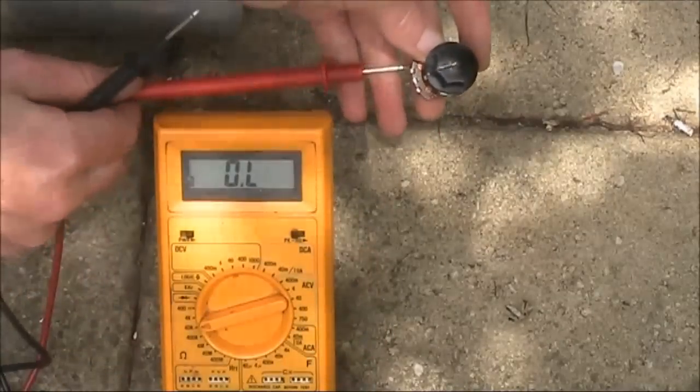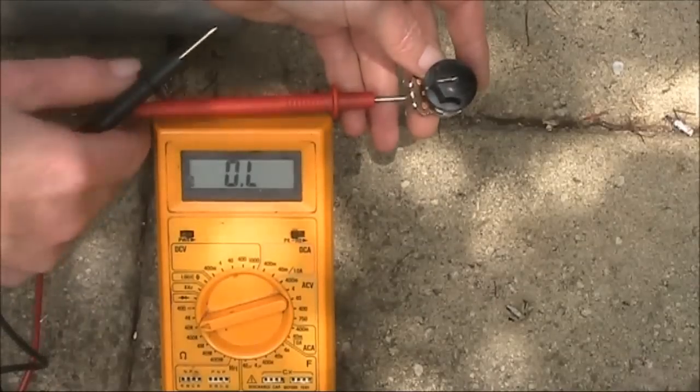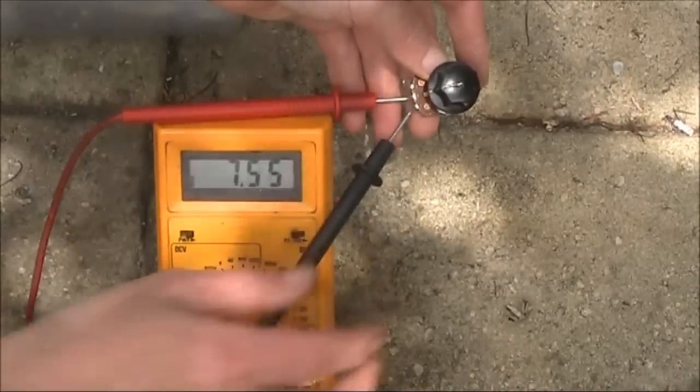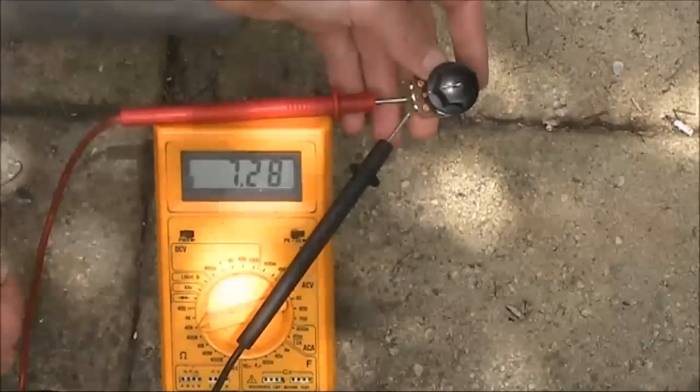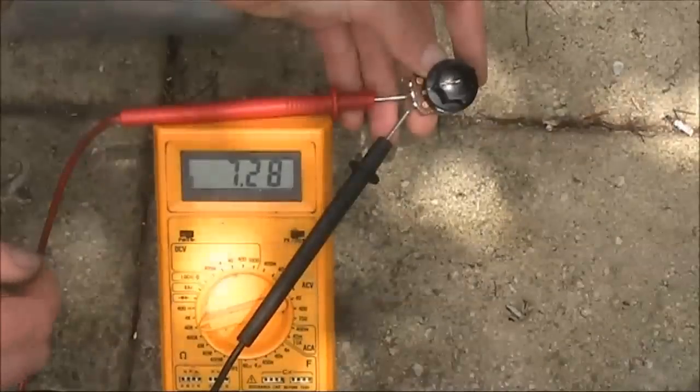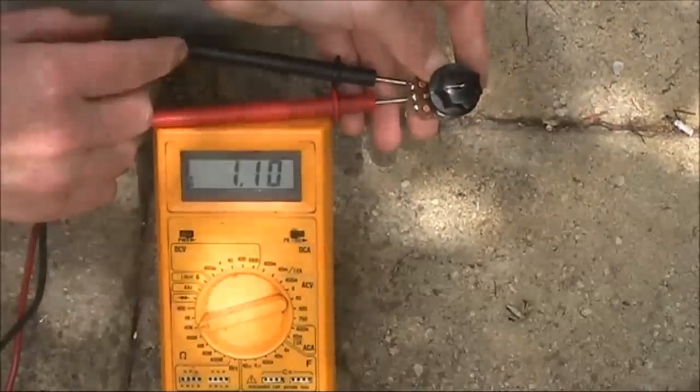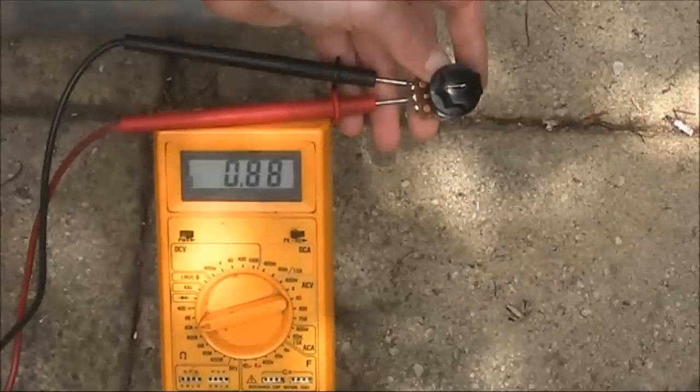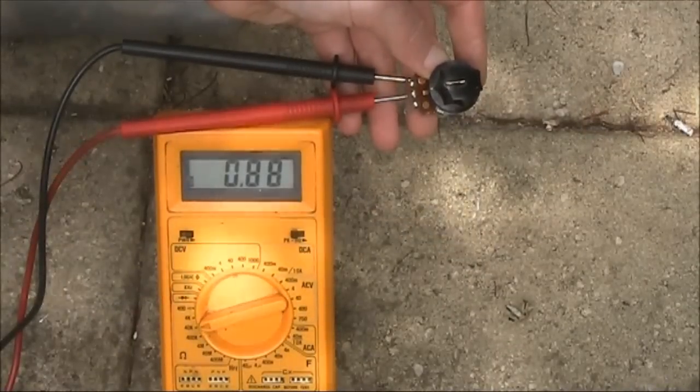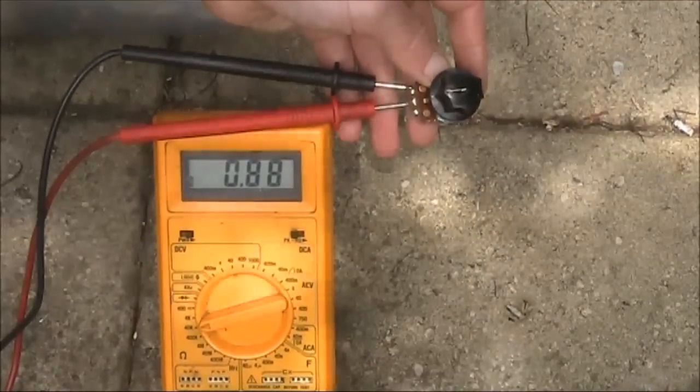Now we'll put one probe in the middle, and at one end it says 7.28, and the other less than 1. So this is definitely not a linear potentiometer.